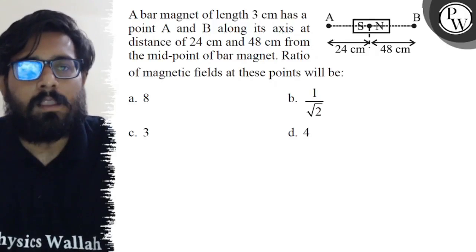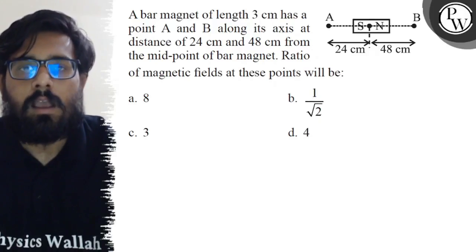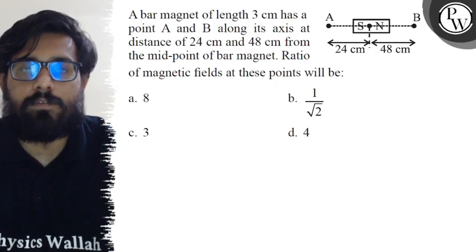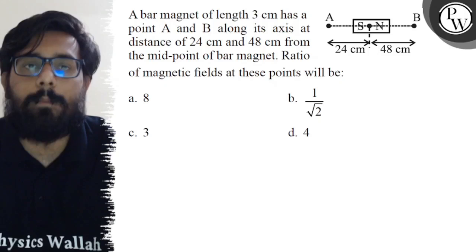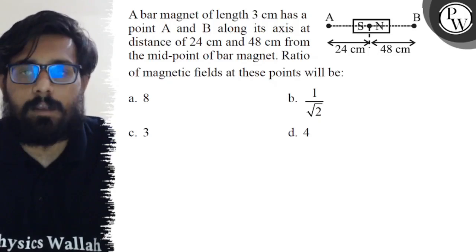Hello, so let's see the question. A bar magnet of length 3 centimeter has a point A and B along its axis at a distance of 24 centimeter and 48 centimeter from the midpoint of a bar magnet. Ratio of the magnetic field at these points will be.